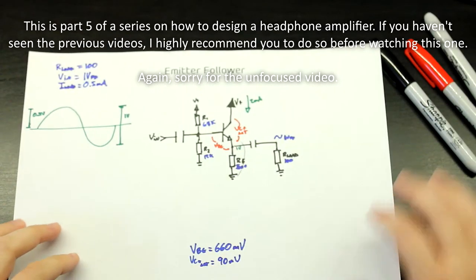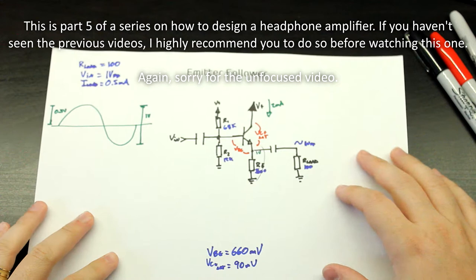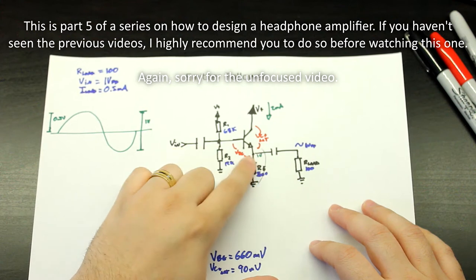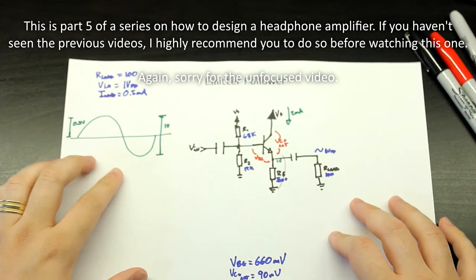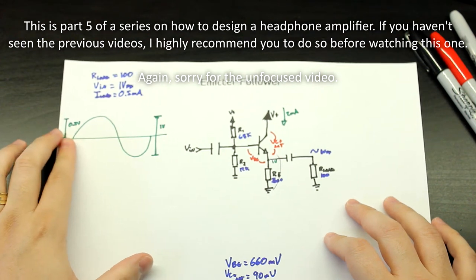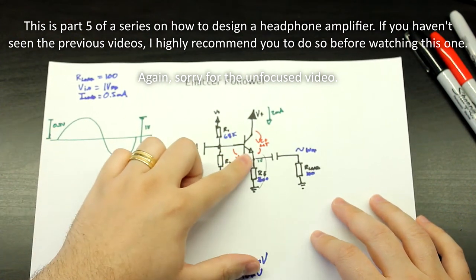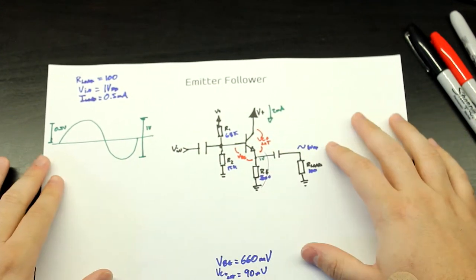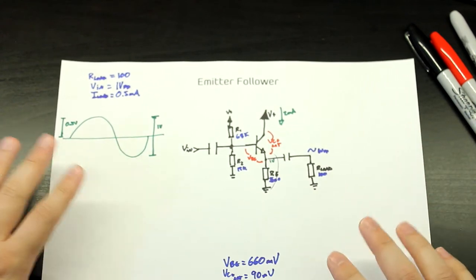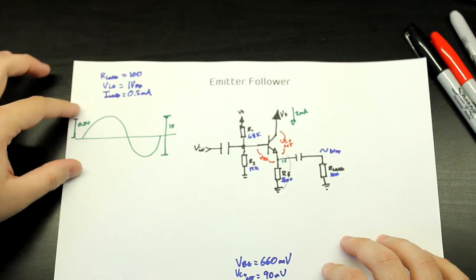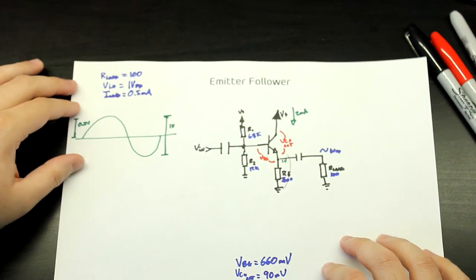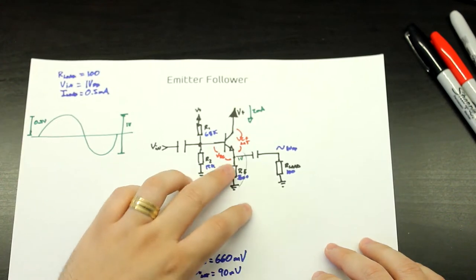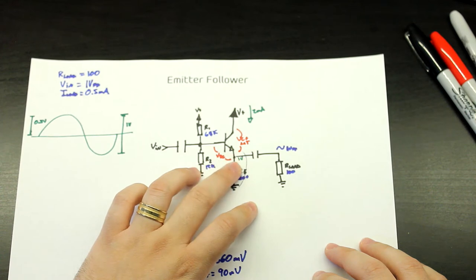Let's take a look at the emitter follower that we've designed in the previous section. The problem is that we've set the voltage here so that it satisfies our input signal, and it also must set the current going through this resistor. The only problem is that this circuit is not flexible at all. If our input signal changes - for example, if we want to accept an input signal of 2 volts peak-to-peak - we'll have a huge problem because this voltage is too low.